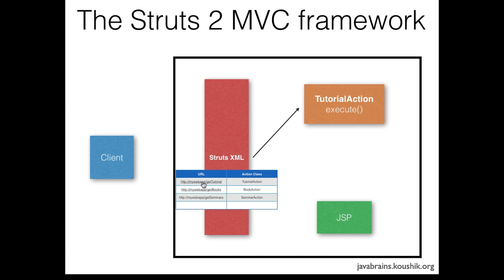We have a URL to the action class mapping, and this is happening fine now. The question is: what happens when the action class method is executed?